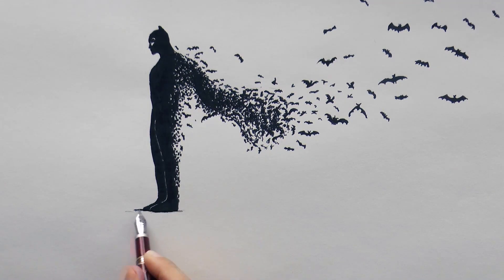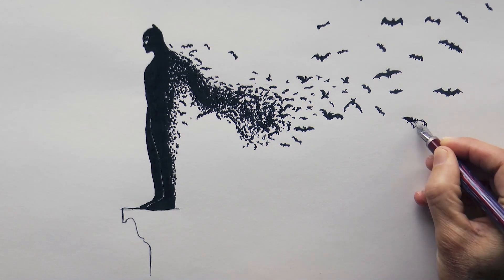Now let's draw the surface where he's standing on. This is going to be a rooftop. But wait! I think we are missing a few more bats.